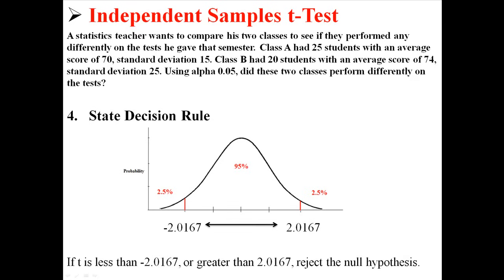And that's where the decision rule comes from. So if t is less than negative 2.0167 or greater than 2.0167, we will reject the null hypothesis. That is our decision rule.